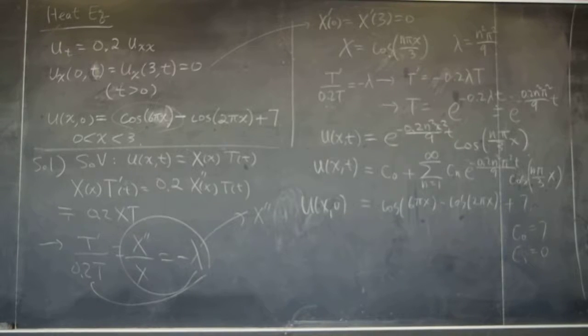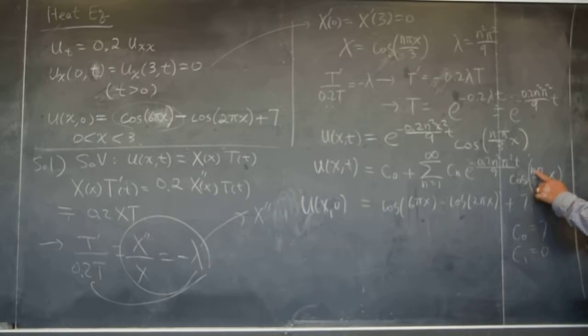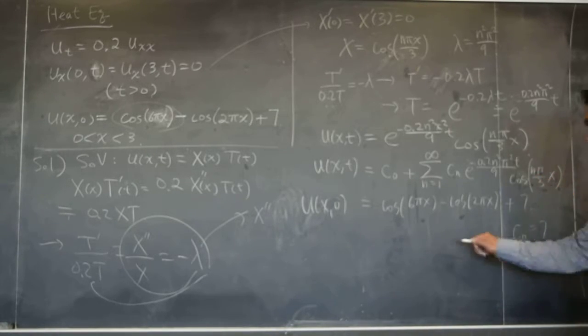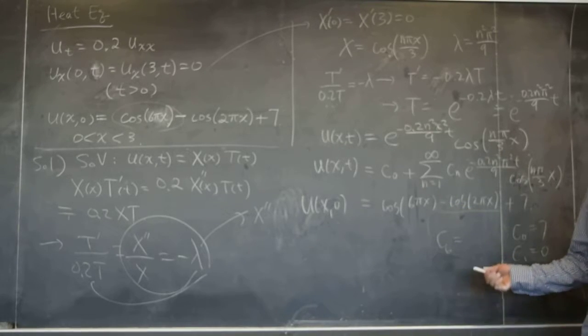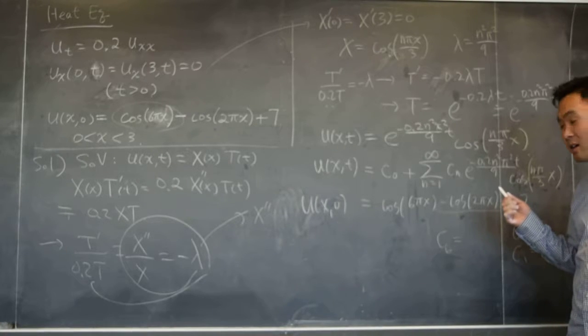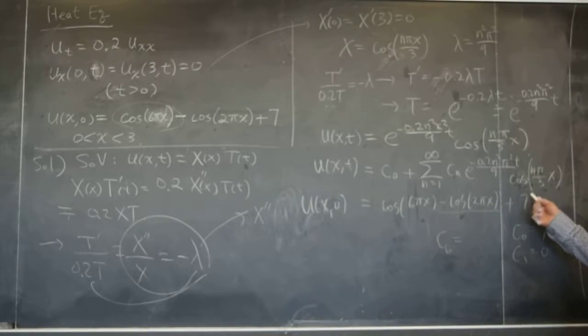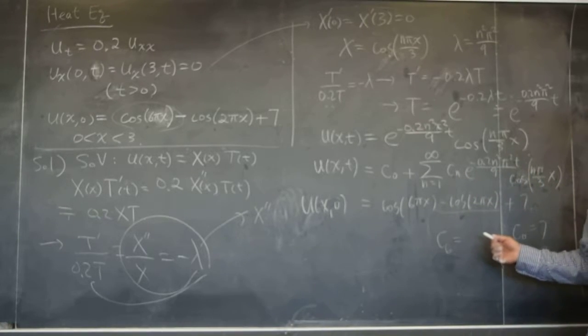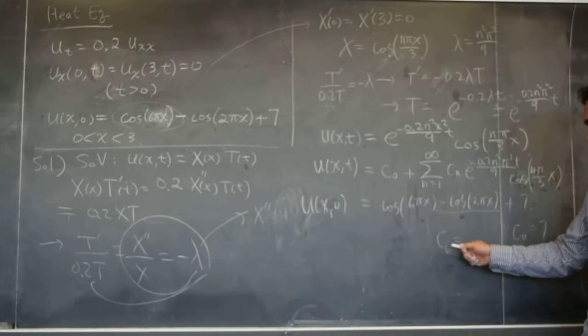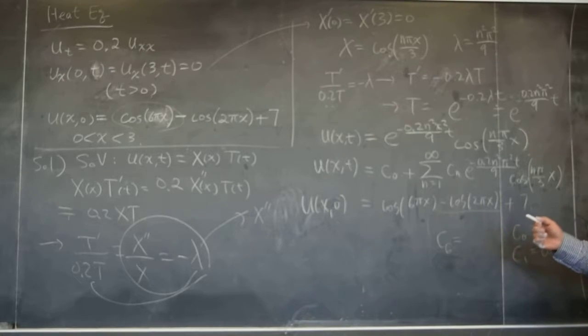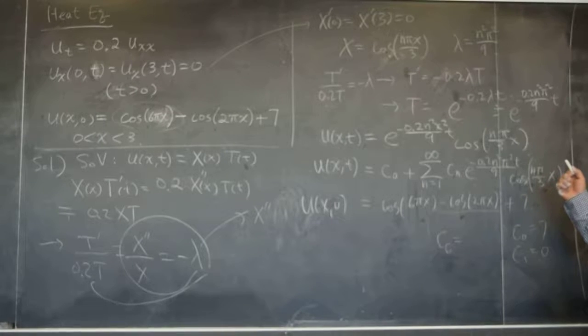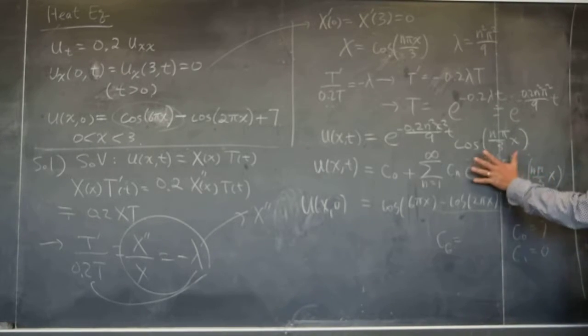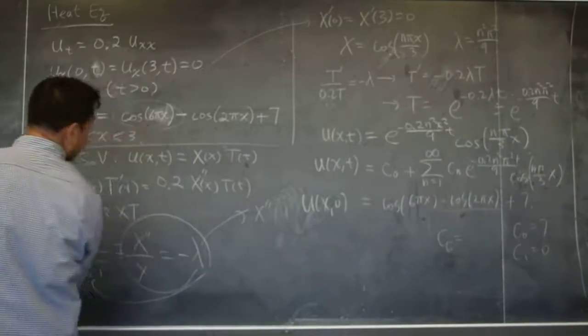Now the next question is, for what C_n would you get a non-zero value? What's the first value of C_n that's non-zero? 6. Very good. When n is equal to 6, what do you get? 6π/3 is 2πx. So C_6 is what? Cosine 2πx? No, no. Cosine 2πx is already here because n is 6. When n is 6, you already have cosine 2πx. And C_6 is the coefficient of that. So C_6 should be? 1. No. When t is equal to 0, that goes away. You need to see that.